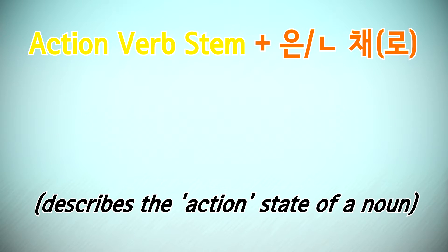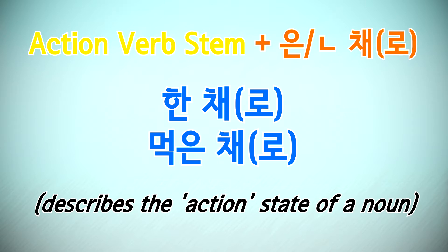First of all, here's how to use it. 채로 is used after action verb stems conjugated into the past tense. You'll take an action verb stem and conjugate it into an adjective in the past tense — typically by adding 은 after a consonant, or ㄴ after a vowel. So 하다 would become 한 채로, and 먹다 would become 먹은 채로.